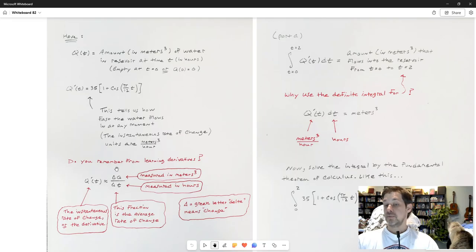What we learned is that the instantaneous rate of change will be approximately equal to the average rate of change of the original function. In our case, q'(t) will be approximately equal to delta q over delta t, so long as delta t is reasonably small. It's because of that we know what the units of q'(t) are.